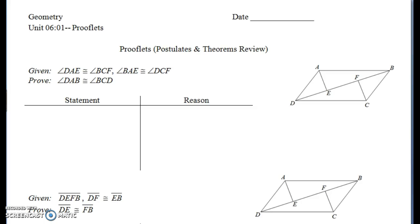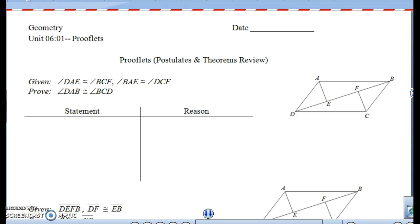This is Geometry Unit 6, Lesson 1: Prooflets. This lesson is a review of how to do the basic theorems for proofs, how they should be set up and how we use them, because proofs are back. Let's take a look at these little prooflets to figure out what theorem is being applied.